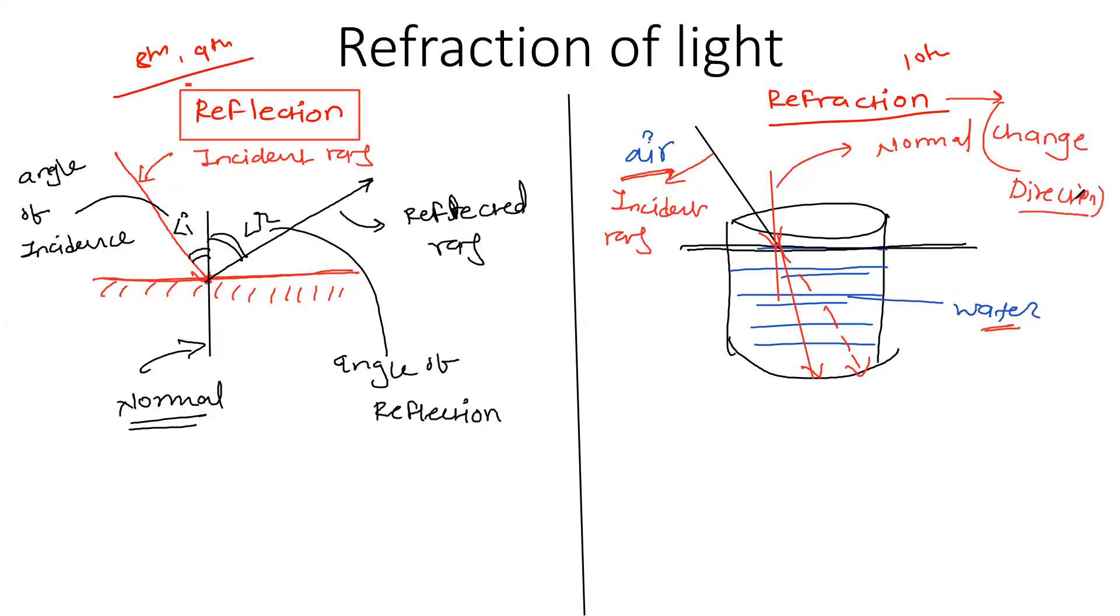So whenever light is traveling from one medium to another, it generally changes its direction. So that change in the direction is called as refraction. The ray is refracted, that's why it's called as the refracted ray. This angle is called angle I, angle of incidence.